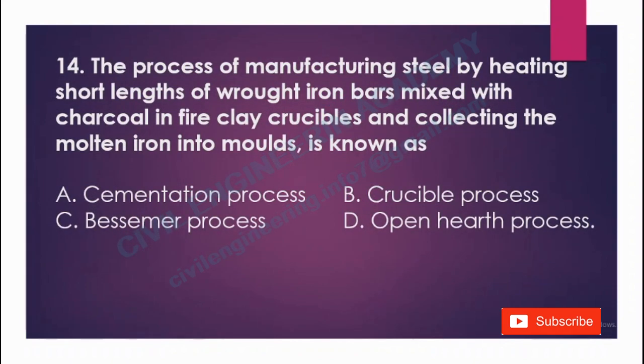The process of manufacturing steel by heating short lengths of wrought iron bars mixed with charcoal in fire clay crucibles and collecting the molten iron into molds is known as: A) cementation process, B) crucible process, C) Bessemer process, D) open hearth process. The answer is crucible process.